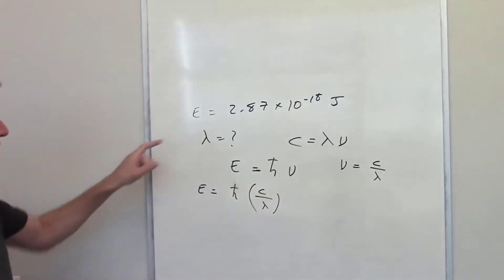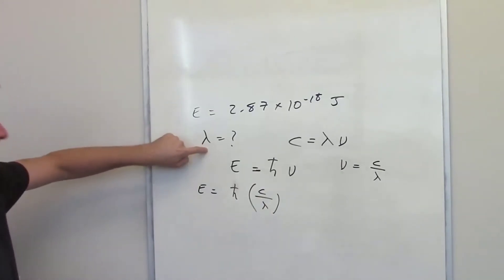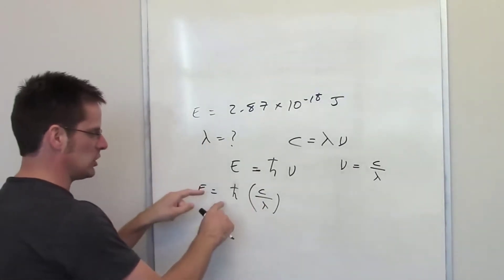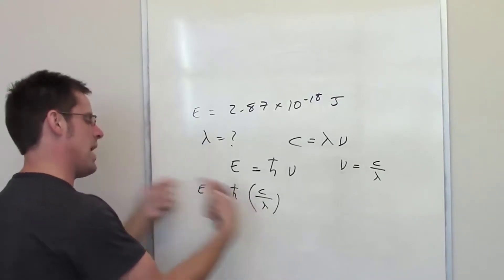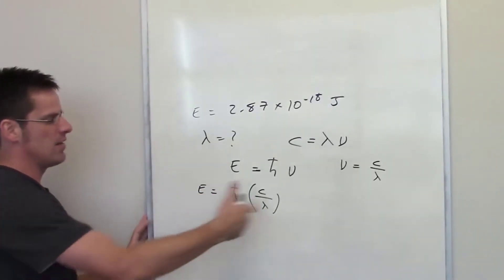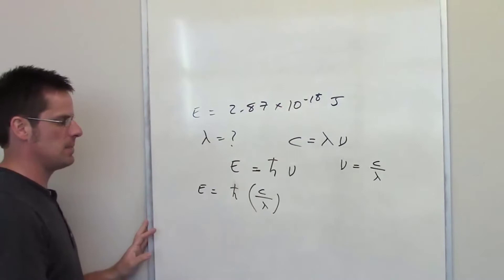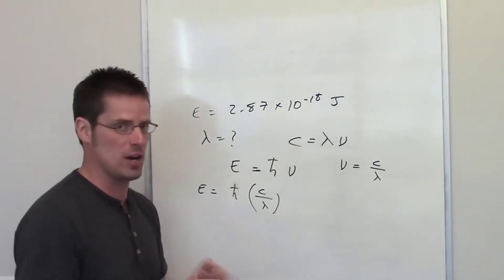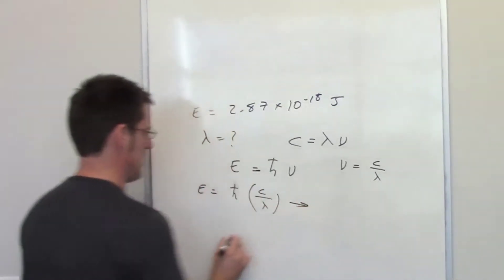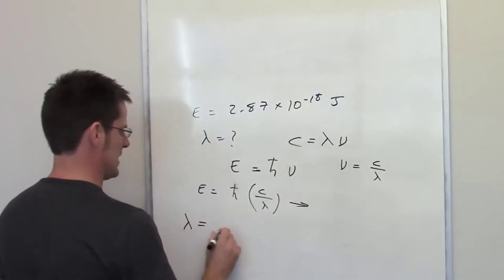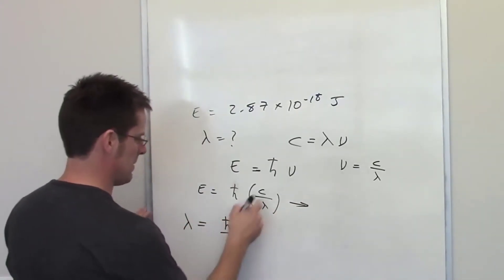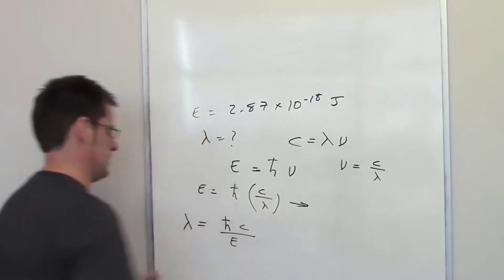The question is asking us to determine wavelength, so I have to do some algebra to rearrange this so that I get wavelength on one side of the equation in the numerator, and everything else on the opposite side. After doing that algebra, we'll see that wavelength is equal to Planck's constant multiplied by the speed of light divided by energy.